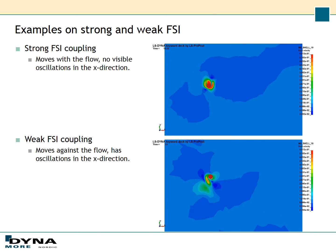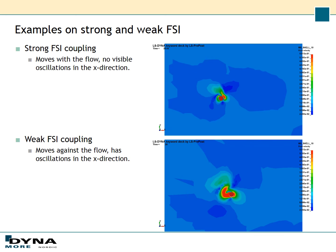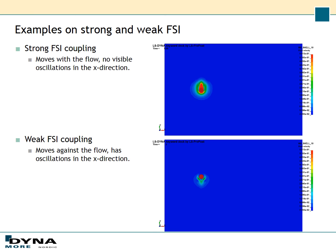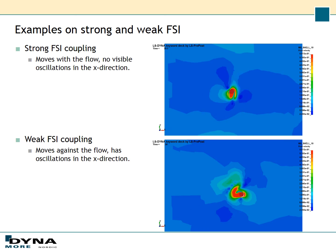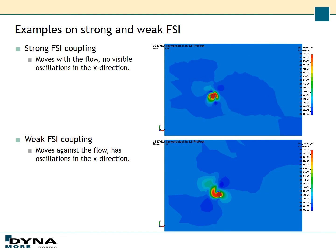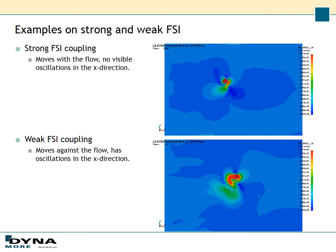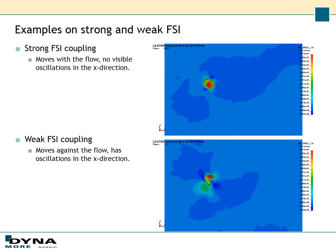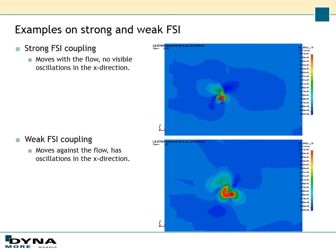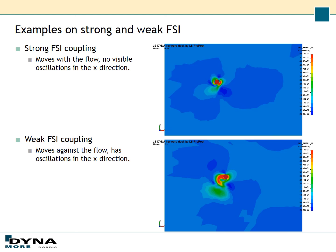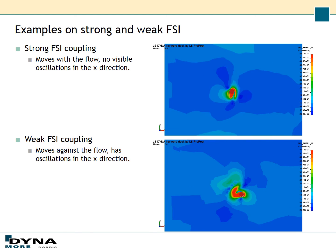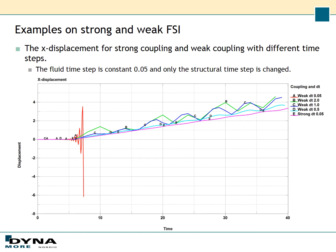Here I've plotted the results from the simulations. The top one is from the strong FSI coupling, and as you can see there is a nice motion oscillating in the vertical direction. When the fluid is applied, it moves with the flow. But in the weak coupling, you can see oscillation occurring in the horizontal direction as well — it moves against the flow. Here I've plotted the x-displacement for both the strong and the weak coupling.